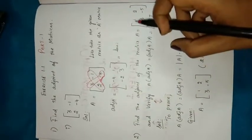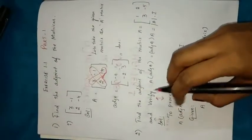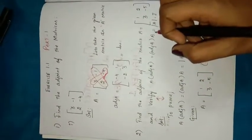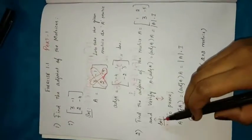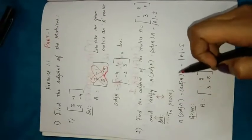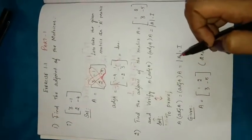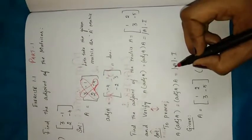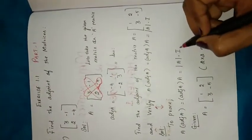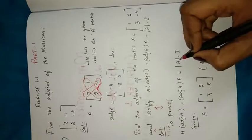The second problem is: find the adjoint of matrix A = [[1, 2], [3, -5]] and verify that A × adj(A) = adj(A) × A = |A| × I. So we have to prove A × adj(A) equals adj(A) × A equals |A| × I.